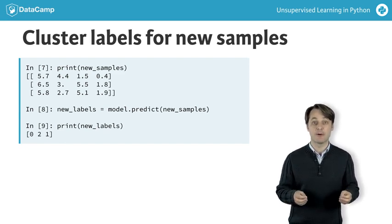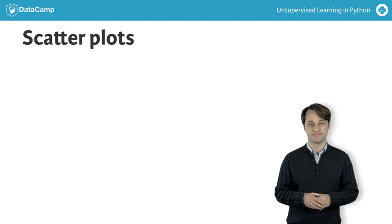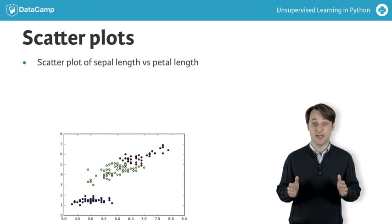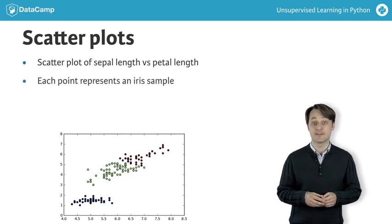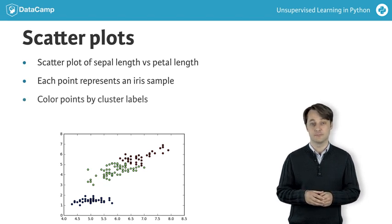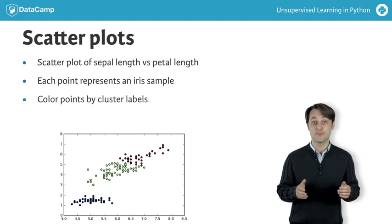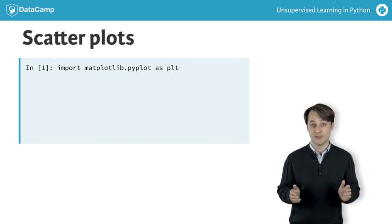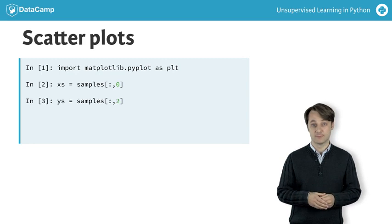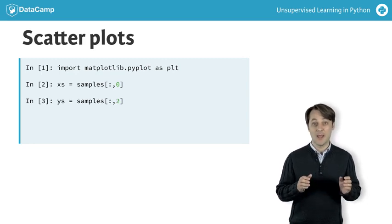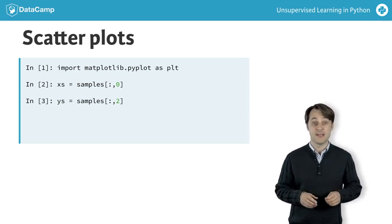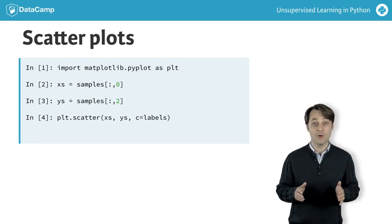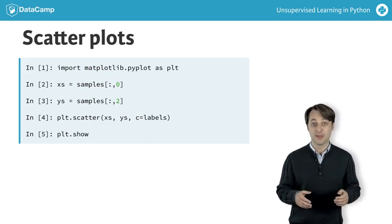In the next video, you'll learn how to evaluate the quality of your clustering. But for now, let's visualize our clustering of the iris samples using scatter plots. Here is a scatter plot of the sepal length versus petal length of the iris samples. Each point represents an iris sample and is colored according to the cluster of that sample. To create a scatter plot like this, use pyplot — import it, conventionally as plt. Now get the x and y coordinates of each sample: sepal length is in the zeroth column of the array, while petal length is in the second column. Call the plt.scatter function, passing the x and y coordinates and specifying c equals labels to color by cluster label. When you're ready to show your plot, call plt.show.